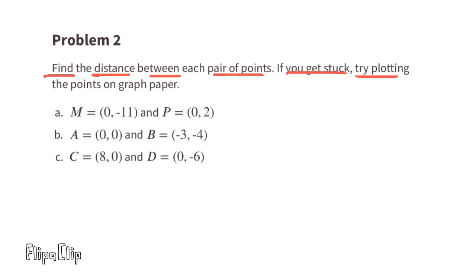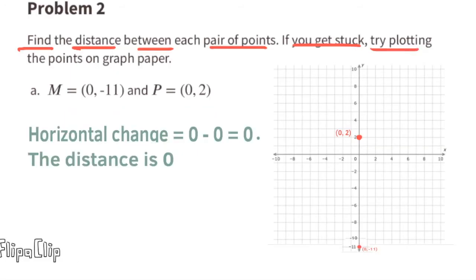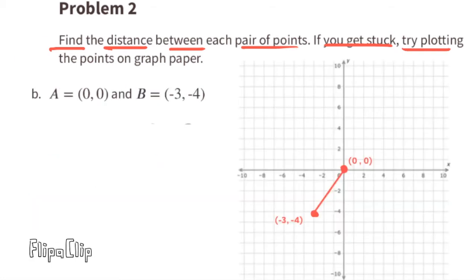Problem 2: Find the distance between each pair of points. If you get stuck, try plotting the points on graph paper. Between this first set of points there's no horizontal change, only a vertical change, and the difference between the location of these two points is negative 13, so the distance between the two points is 13 units.